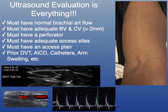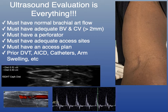When evaluating patients for these devices, ultrasound evaluation is everything. You need to make sure that arterial inflow into the arm is normal — a normal brachial artery flow or waveform. You need to confirm that the basilic vein and cephalic vein are patent, that there is a patent perforating vein, and that you have adequate access sites, whether antegrade in the biceps region or via the wrist. Use ultrasound to look for anything that may prevent percutaneous dialysis fistula creation.